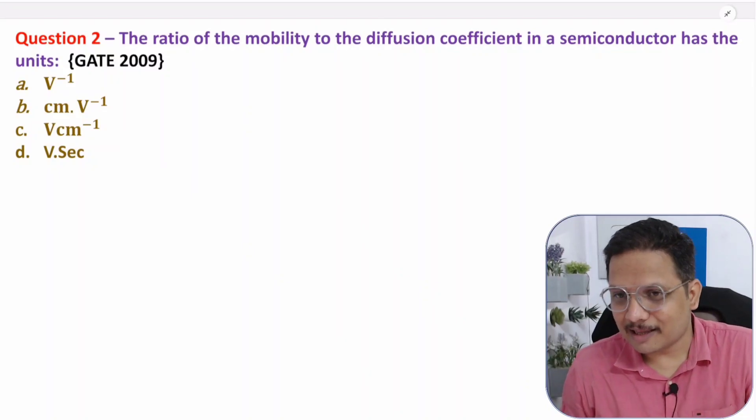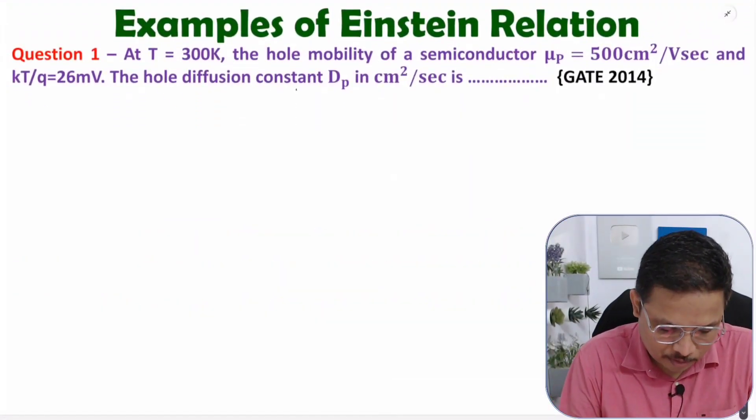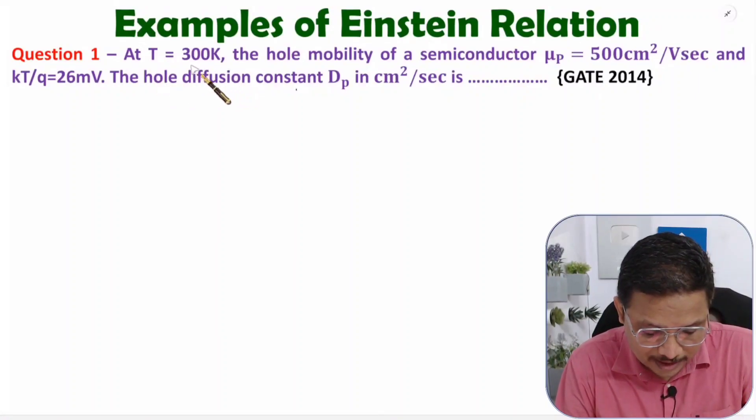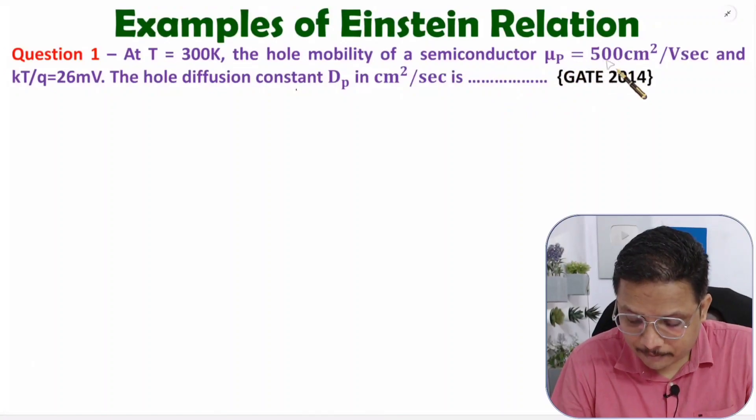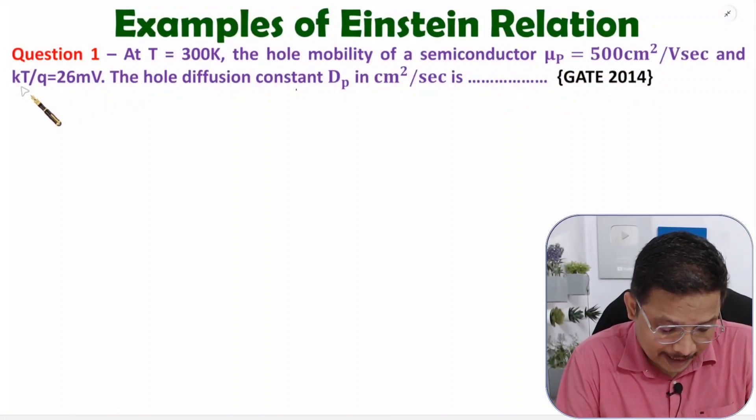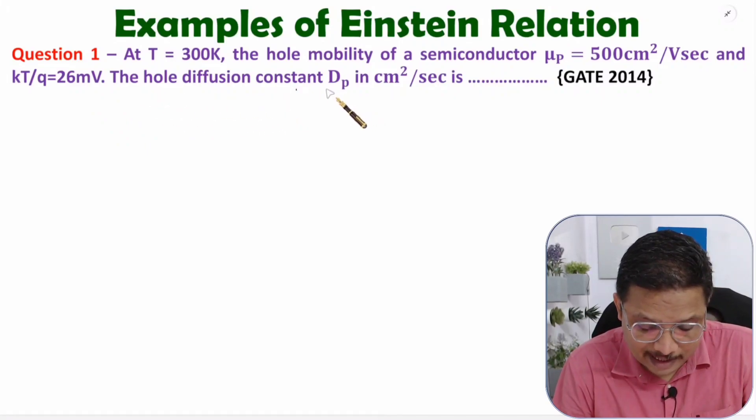Now I am going to solve the first question. If you observe, at T = 300 Kelvin, the hole mobility μp = 500 cm²/V·sec is given, and kT/q = 26 mV is also given. The hole diffusion constant Dp in cm²/sec is how much?